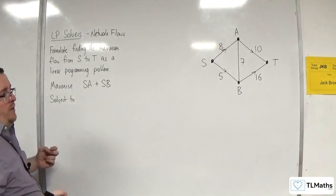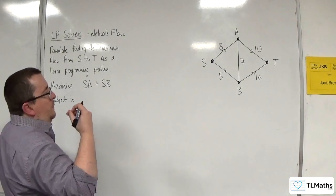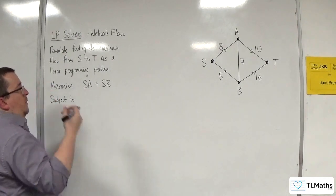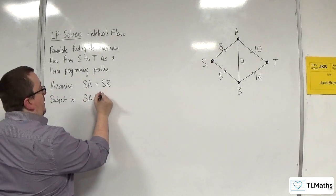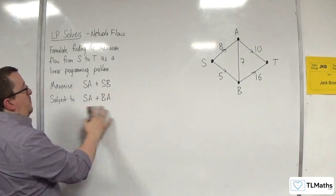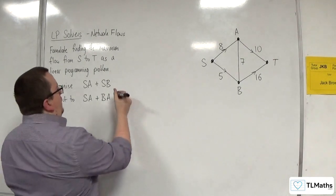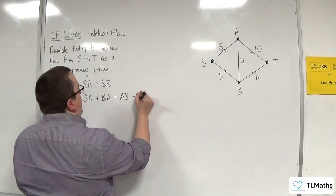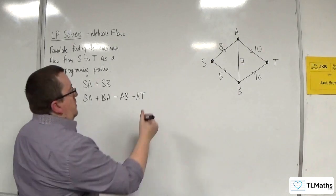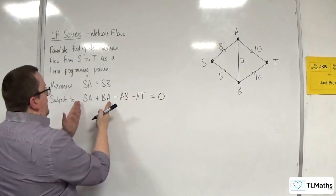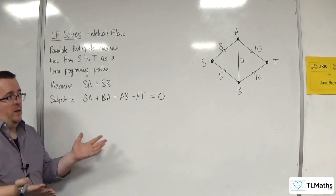Now, I don't need to have one for S because all the flow is going out of S anyway, so there's no flow going in. So it is subject to one constraint for A: S, A plus B, A, those are the possible flows going into A, and the possible flows going out are A, B and A, T. And that's got to be equal to 0 because the flow in take away the flow out has got to be equal to 0. The flow in has got to equal the flow out.